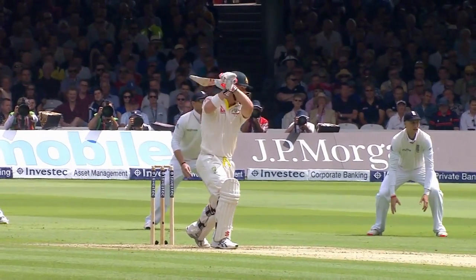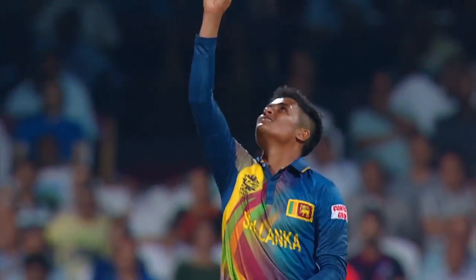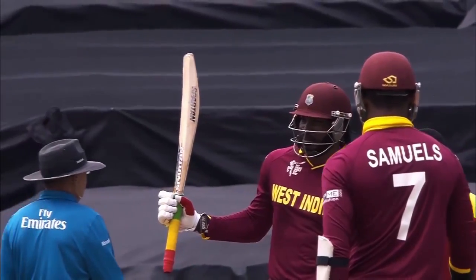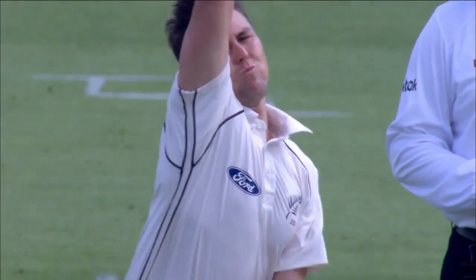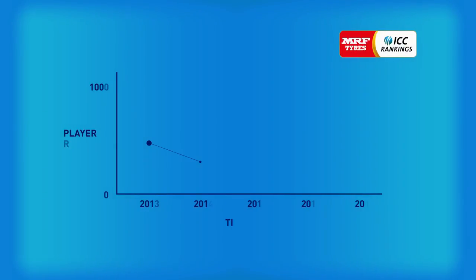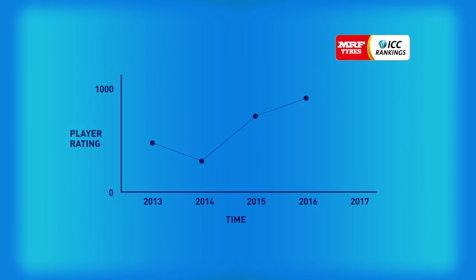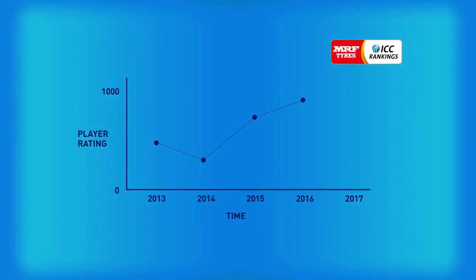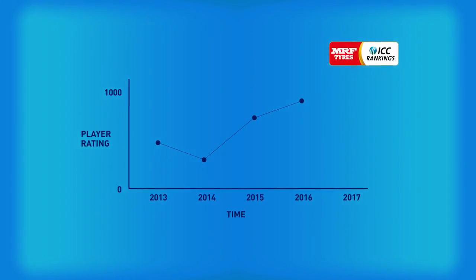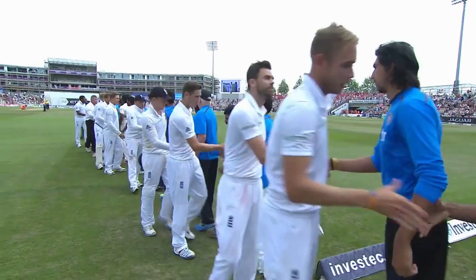Today's MRF Tyres player rankings are used for all three formats of the game, and there are rankings for batters, bowlers and all-rounders for both men and women. All international cricketers are rated on a scale from 0 to 1000 points for both batting and bowling. A player's rating will move up and down as their form fluctuates, and after every match a player's performance is assessed.